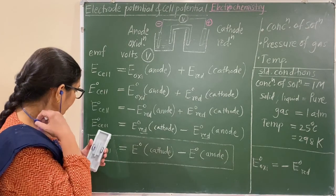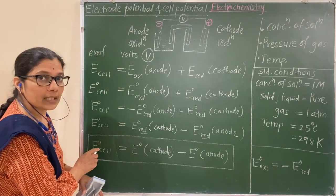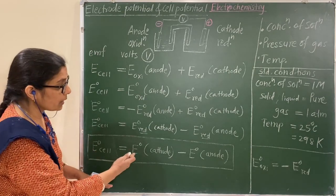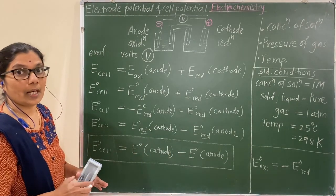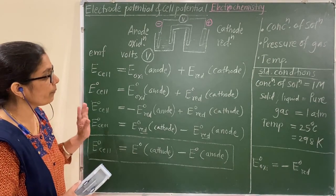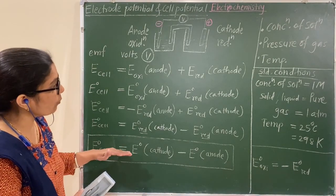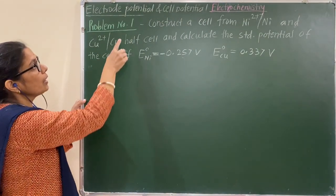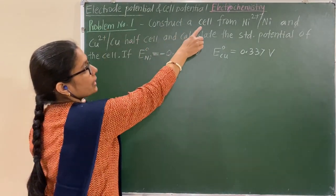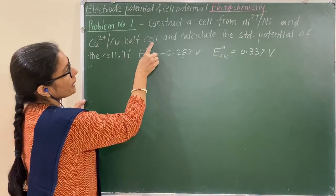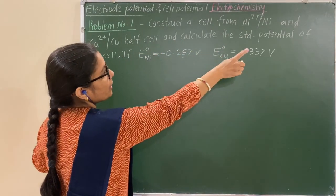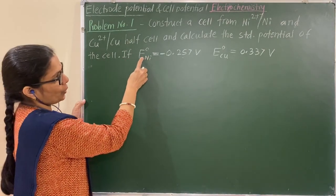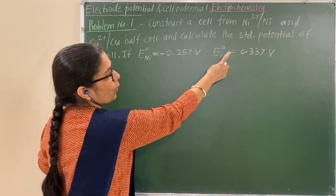The standard cell potential — that is the EMF of the cell, or cell voltage — is the difference of two standard electrode potentials. Now let us see a numerical problem based on this. First problem: construct the cell from nickel and copper half cells and calculate the standard potential of the cell, given the standard potentials of nickel and copper.